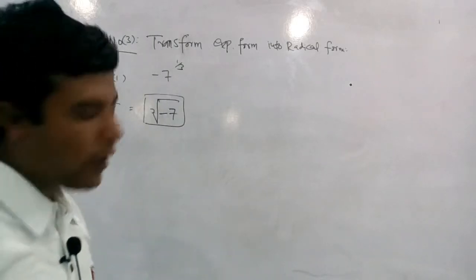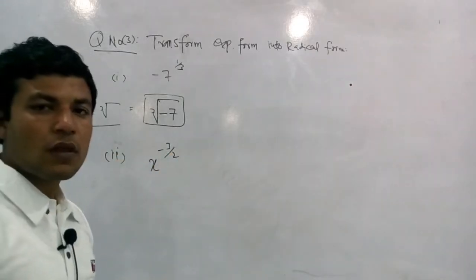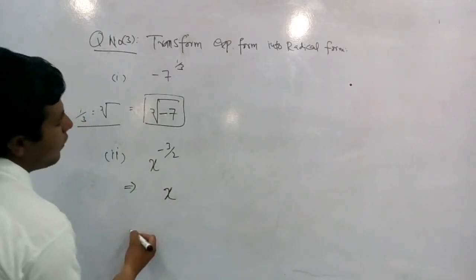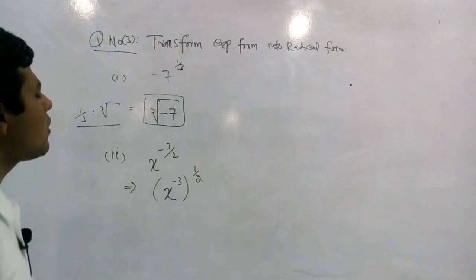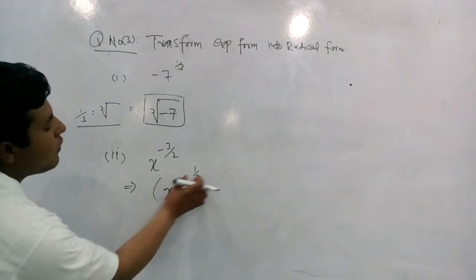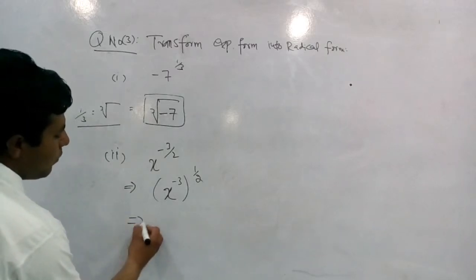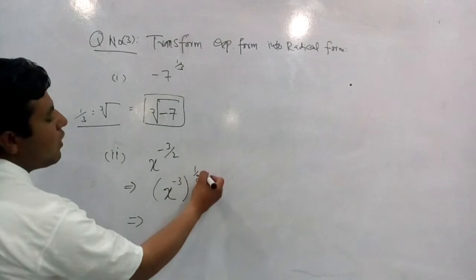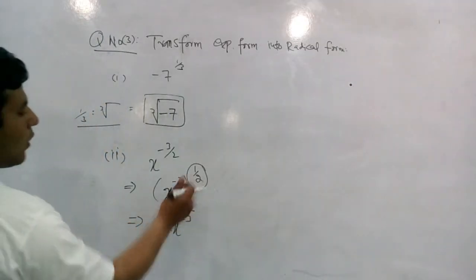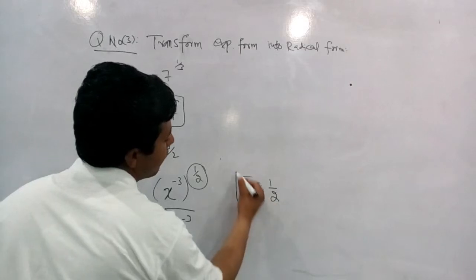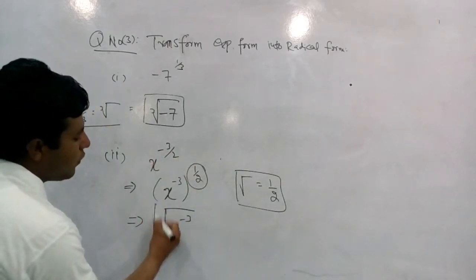Question number 2: x to the power minus three by two. اسے radical form میں convert کریں گے - one by two کی value square root ہوتی ہے، تو x کی square root لکھ سکتے ہیں۔ یہ exponential form سے radical form میں convert ہو گیا۔